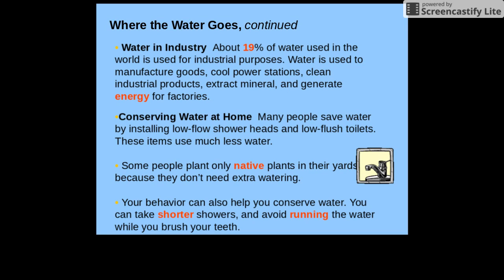Many people save water through conservation — using only what you need and making it last longer. Some install low-flow showerheads and low-flow flush toilets that use less water. Others plant only native plants in their yards because native plants don't need the extra watering that other plants require. Your behavior can also help: take shorter showers and avoid running the water while you're brushing your teeth.